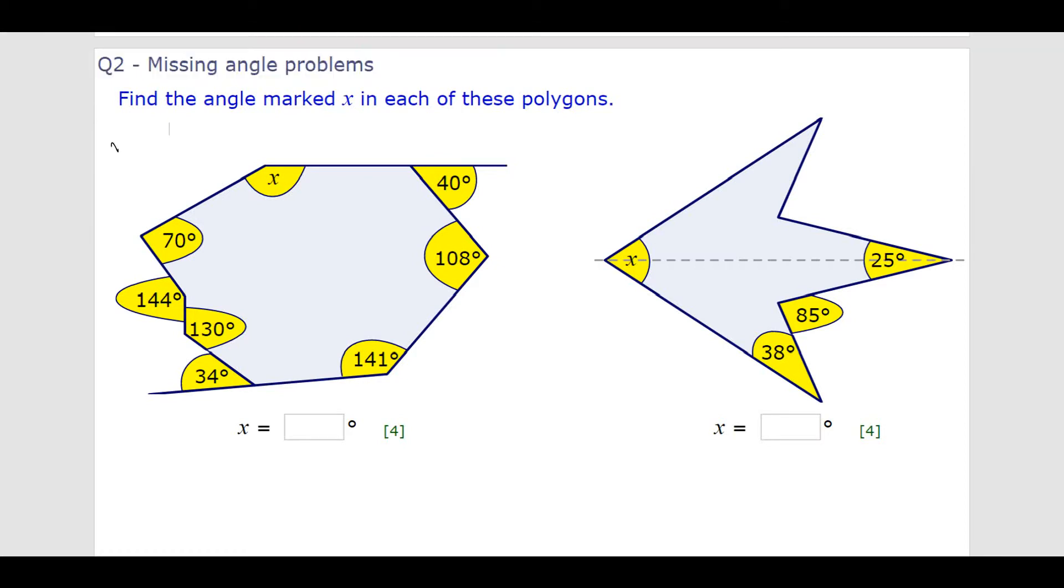Now, a reason why these questions are quite difficult is because these kind of polygons are what we would call concave. There are two kinds of polygons. We have convex, which are the ones that we've seen in class, the ones that you'll see in most questions, and these are when all interior angles are less than 180 degrees.